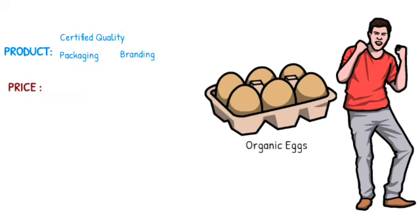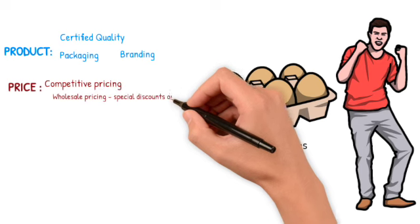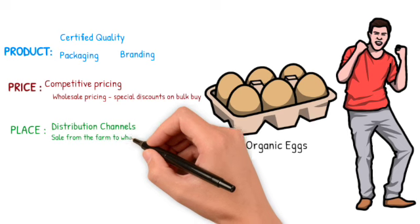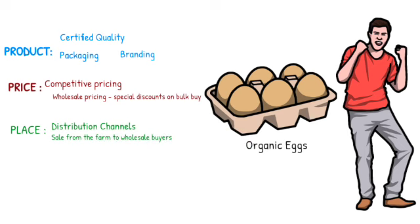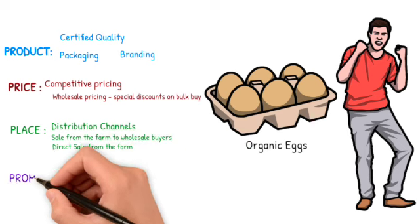Next thing is price: we will use comparative pricing, and another thing we can do is wholesale pricing, because this is the business of eggs and we can buy in bulk. People who are doing bulk buying can get special discounts. Then comes place — the distribution channels. The first is sale from the farm to wholesale buyers, and the second is direct sale from the farm.